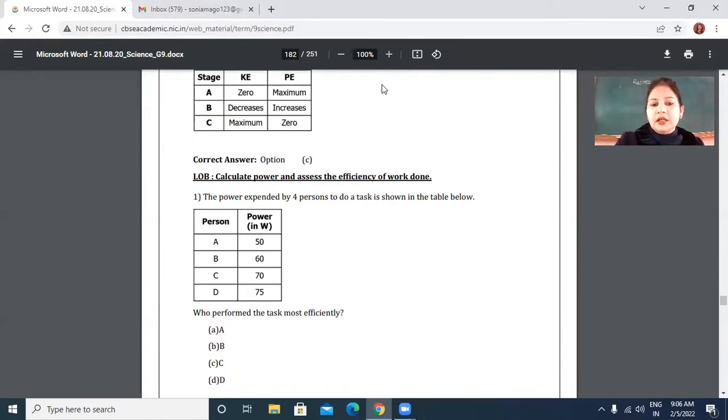The power expended by four persons to do a task is shown in the table below. Person A has 50 watt of power, B has 60, C has 70 and D has 75 watt of power. Who performed the task most efficiently, you have to tell.